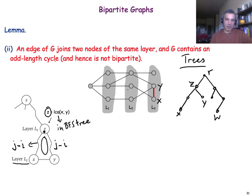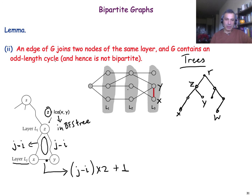Now we have a cycle: a path from z to x, an edge from x to y, and a path from y back to z. The cycle length is 2*(j minus i) plus 1, which is 2 times an integer plus 1 — an odd number. So there is a cycle of odd length, and since a bipartite graph cannot contain any such cycles, we conclude that if there is an edge between two nodes at the same layer, the graph cannot be bipartite.